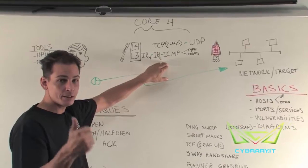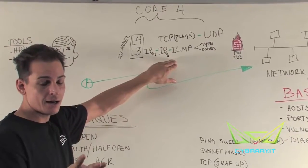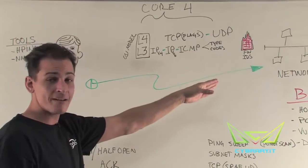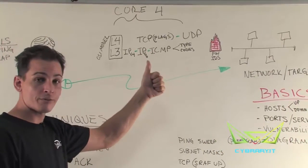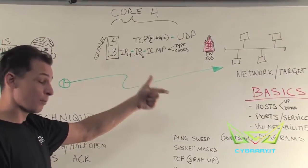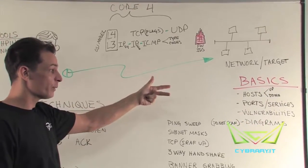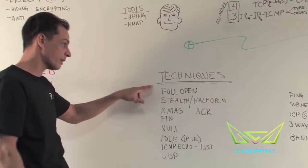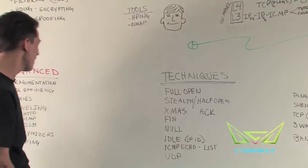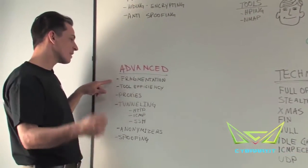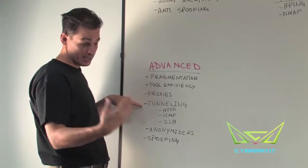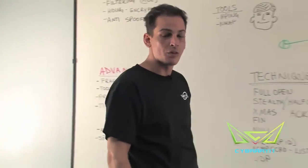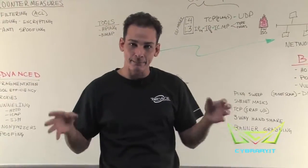To summarize: you have yourself, you have a target, and you'll use the core four — TCP, UDP, ICMP, and IP (either version 4 or 6) — as your only connection mechanism. You'll look for hosts that are up or down, what ports and services they're running, what vulnerabilities exist, then move into advanced nmap and hping commands. Finally, make sure you're anonymous and can't be caught. Of course, we're doing all of this legally and ethically. That wraps up the theory of scanning in penetration testing.